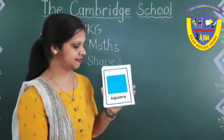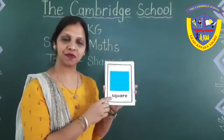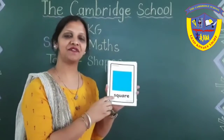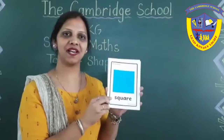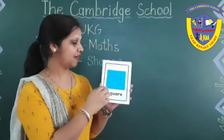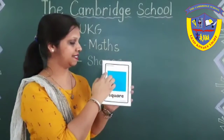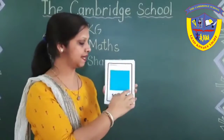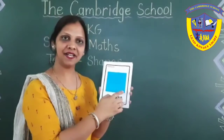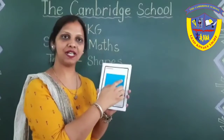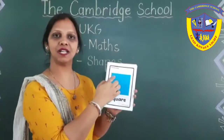Next is square. Very good. Which shape is this? Square. Square has four sides and all sides are equal.